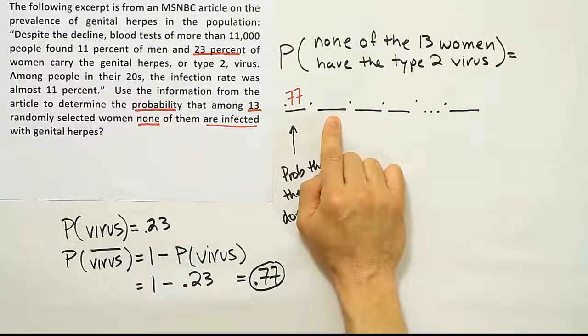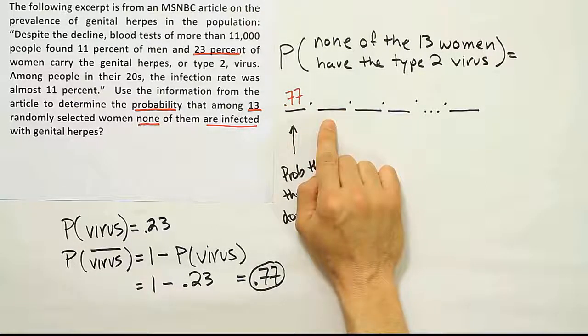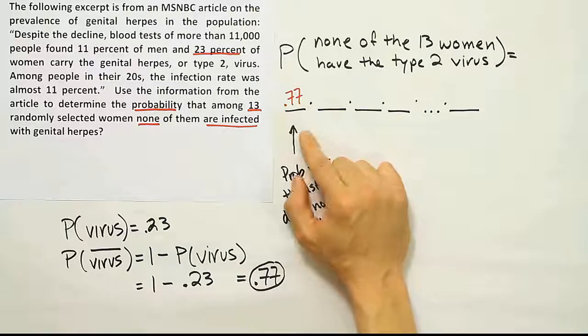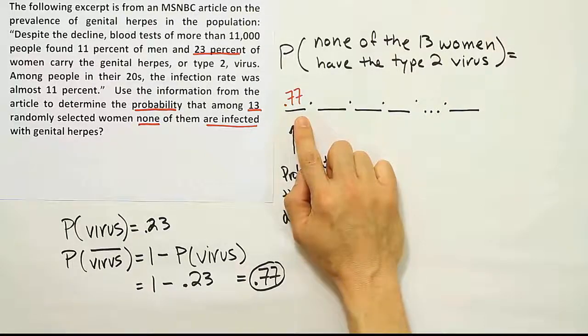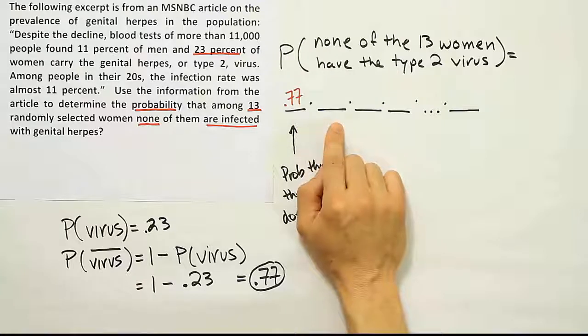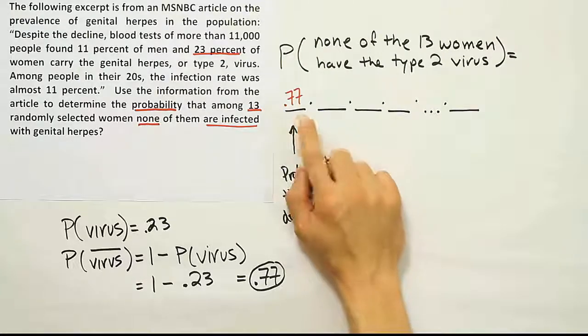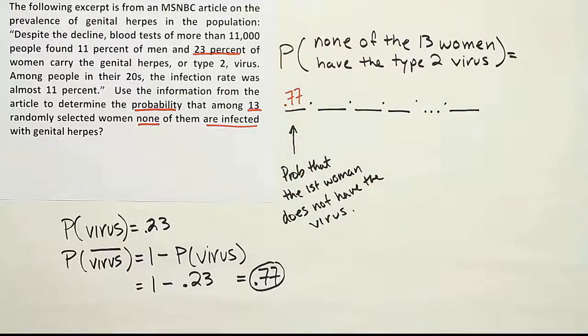So we'll assume that that is independent in that regard. In terms of, you know, putting the subject back, you may say, well, you're not going to take the same woman again, so you might actually have a dependent scenario because there's less women in the population now once you've pulled this woman out and looked at her status.